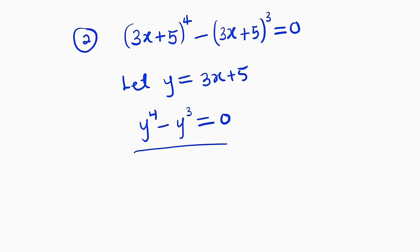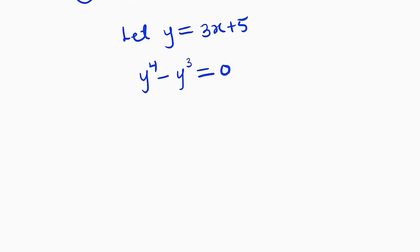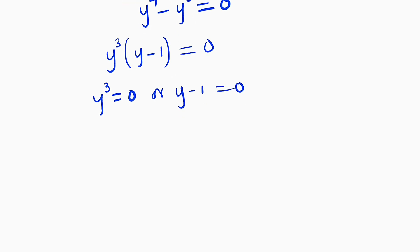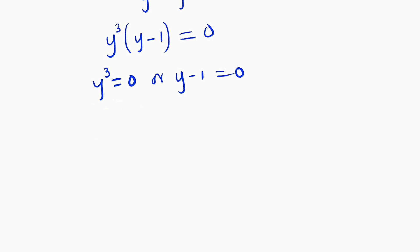Now we have a very simple equation. To factorize the left-hand side, the highest common factor is y to the power of 3. So we have y cubed times (y minus 1) equals 0. We set each factor to 0: y to the power of 3 equals 0, or y minus 1 equals 0. Taking the cube root of y cubed equals 0 gives y equals 0. For the other factor, y equals positive 1.